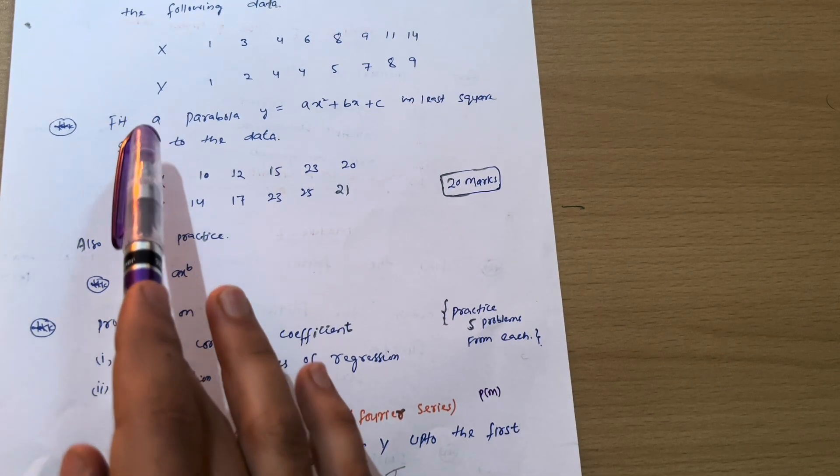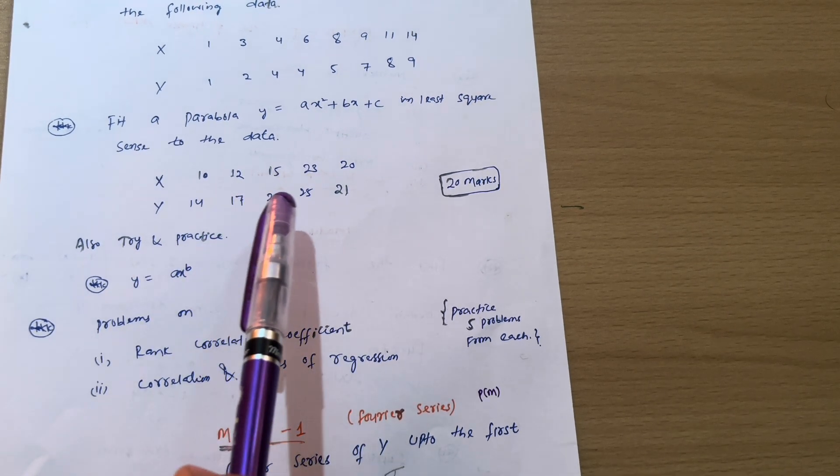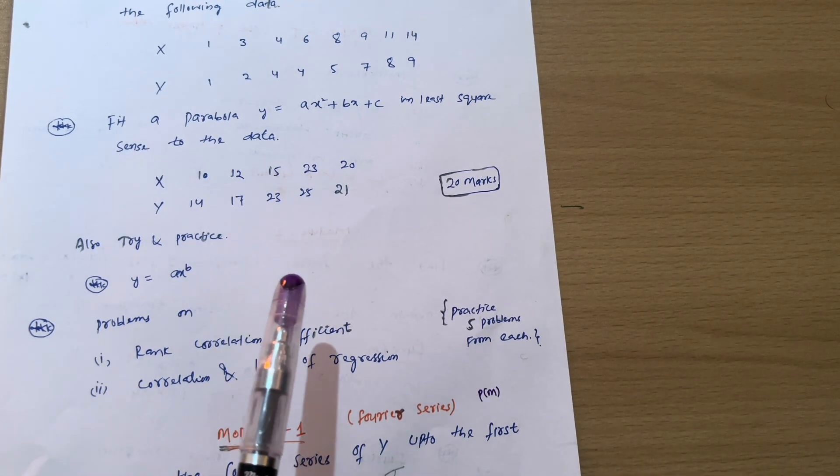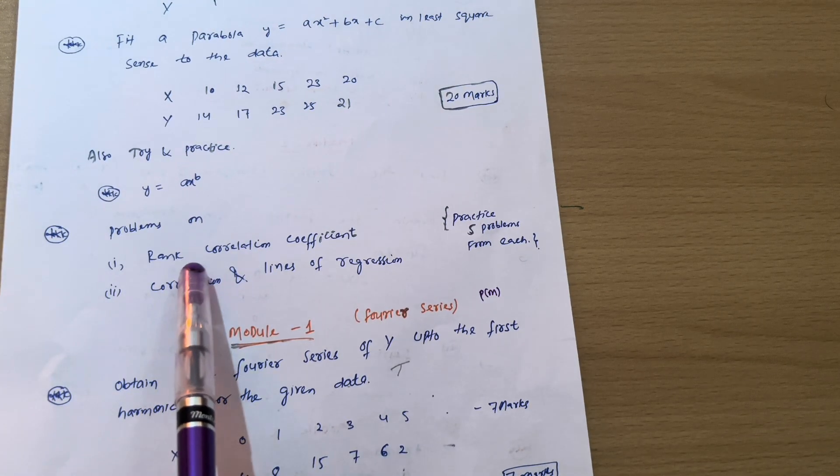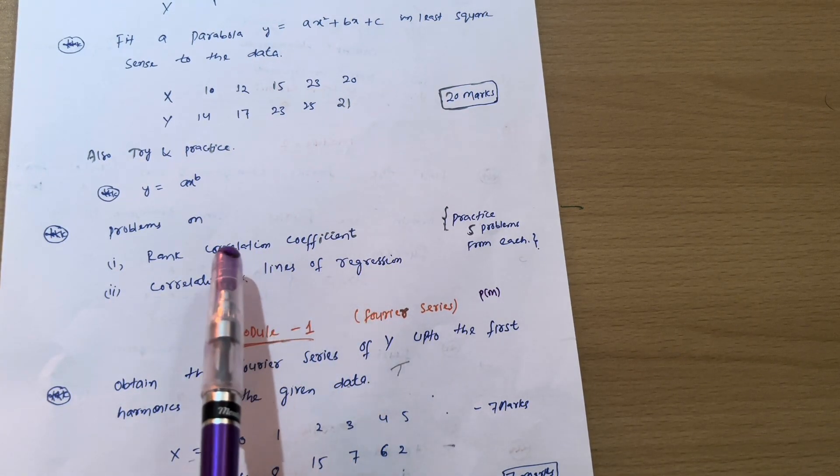Again, seven marks question. So on these three topics, you should practice three problems so that you can grab 14 marks from these three concepts. So next two concepts we are having here, rank correlation coefficient and correlation and lines of regressions, which are very simpler ones.